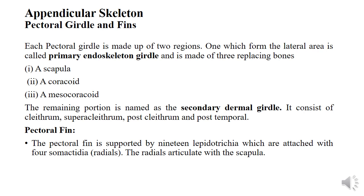The secondary dermal girdle consists of the cleithrum, supracleithrum, postcleithrum, and post-temporal. The cleithrum is a large bone that extends upward from the base of the pectoral fin and is anchored to the cranium above the gill, forming the posterior edge of the gill chamber. The pectoral fin is supported by 19 lepidotrichia which are attached with four radials. Lepidotrichia are dermal elements present at the distal margin of the bony fins. The radials articulate with the scapula.